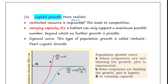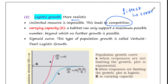No population of any species in nature has unlimited resources to permit exponential growth. This leads to competition between individuals. Eventually the fittest individuals will survive and reproduce. In nature, a particular habitat has limited resources that can support a maximum possible number of individuals, beyond which no further growth is possible. That limit is called the carrying capacity, K.